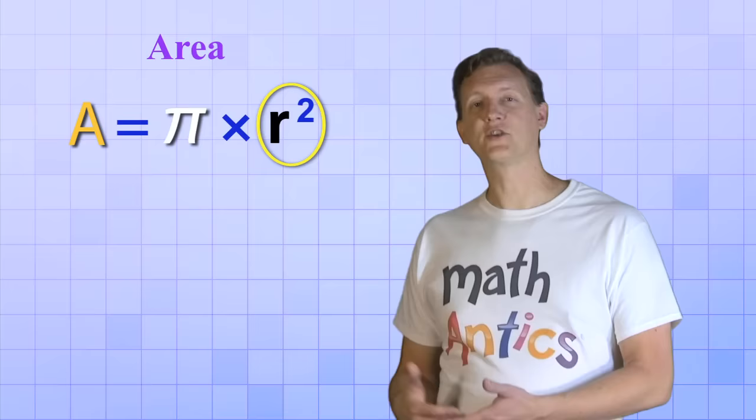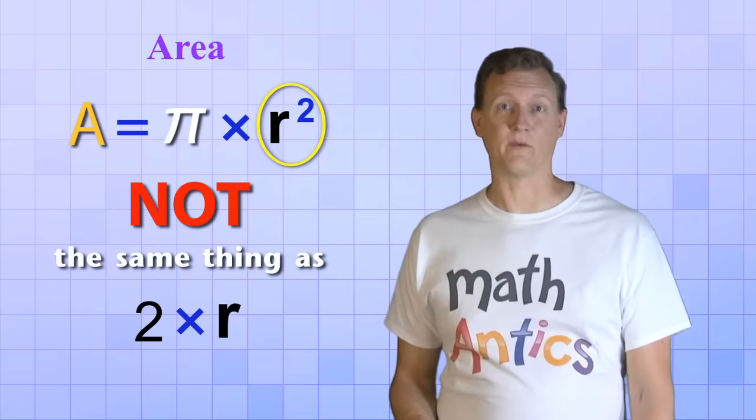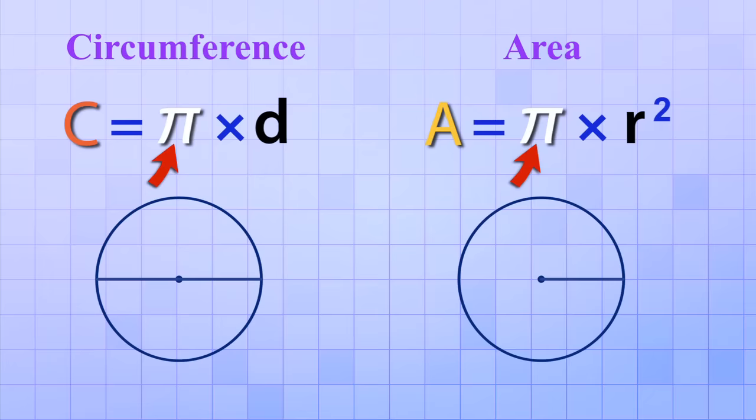Oh, and one really important thing to keep in mind is that r squared is not the same thing as 2 times r. That's a common mistake that students make when first learning how to find the area of a circle. And if we look carefully at both of our formulas, you'll see why. These two formulas have a lot in common.